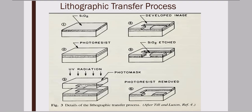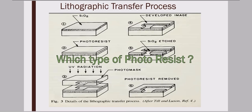As I mentioned, there are two types of photoresist: positive photoresist and negative photoresist, which we will discuss in coming slides. Here is a quiz question from this diagram: which type of photoresist was used, given that the portion exposed to UV radiation has been removed and some part has been retained?